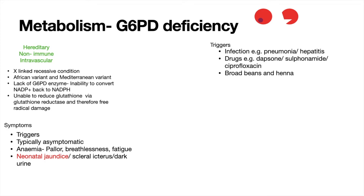Other drug triggers include sulfa drugs like sulfonamides and antibiotics such as ciprofloxacin, which may help to influence antibiotic choice. There are also certain foods such as broad beans that can increase oxidative stress, and interestingly, henna as well.